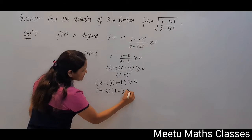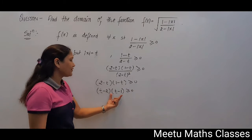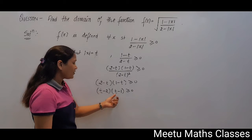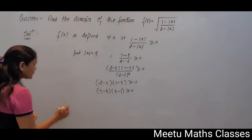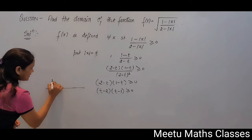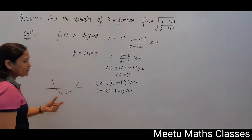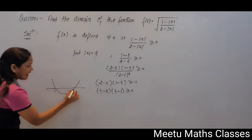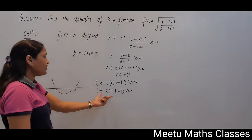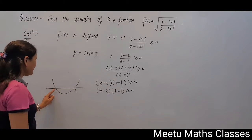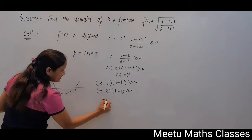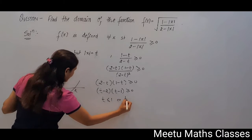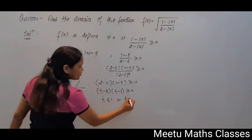This is a quadratic in t with a positive coefficient of t², so it is like an upward parabola with two roots 1 and 2. Your function is positive when t ≤ 1 or when t ≥ 2.